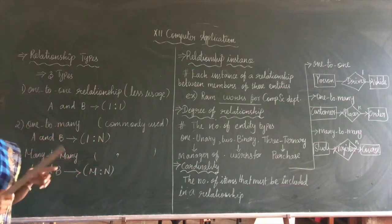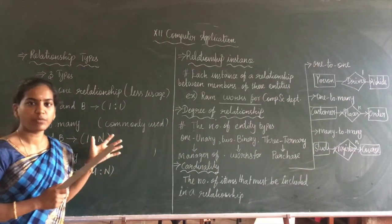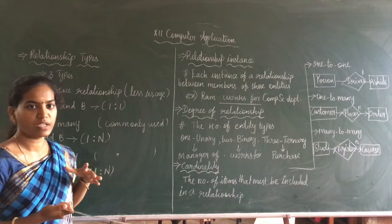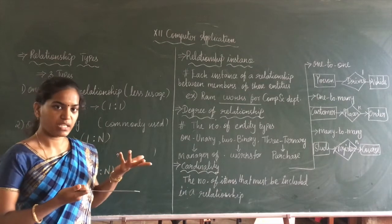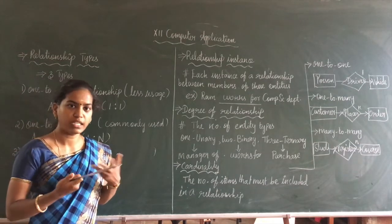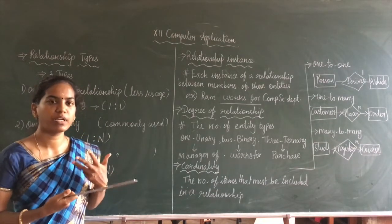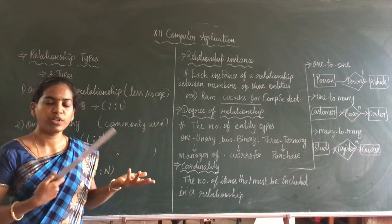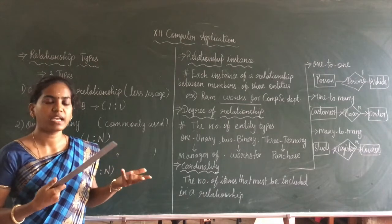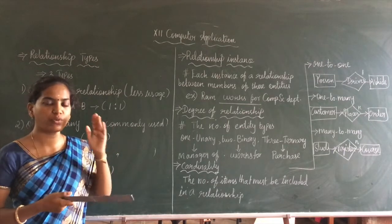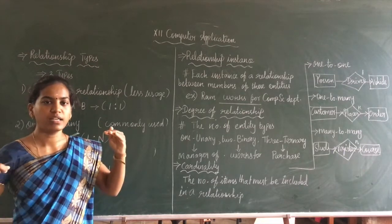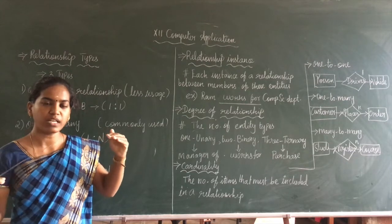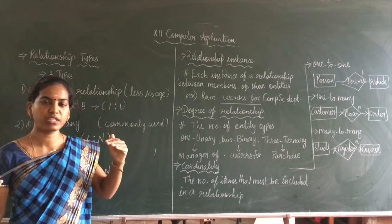The next is one-to-many relationship. The example here is a phone number. One student can have many phone numbers — for example, a mobile number and a geo number. So one entity relates to many instances of another entity, and that is called a one-to-many relationship.